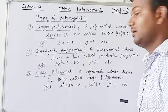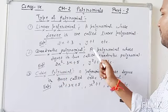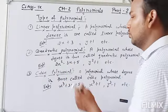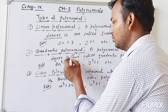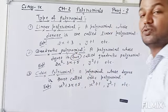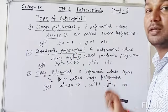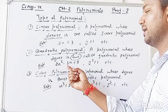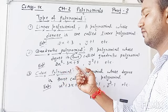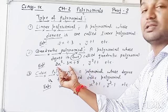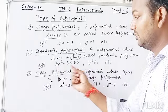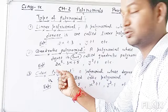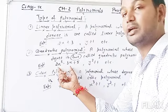A polynomial whose degree is 2 is called a quadratic polynomial. An example is 2x² − 3x + 5. You can see here the degree of this polynomial is 2, so this is an example of a quadratic polynomial.